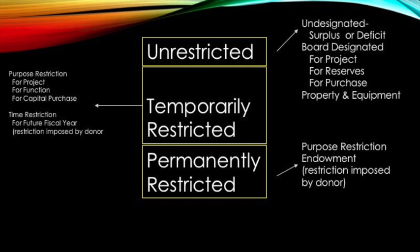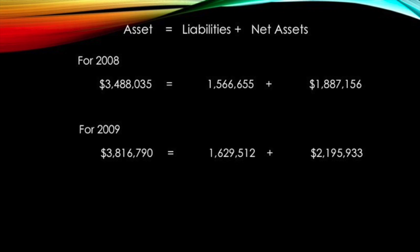In summary, unrestricted, temporarily restricted, and permanently restricted net assets have very unique differences in how the funds are allocated and utilized. Assets equals liability plus net assets. Referring back to the Texas Health balance statement for the year 2008: total assets were $3,488,035; total liability was $1,566,655; and net assets were $1,887,156.